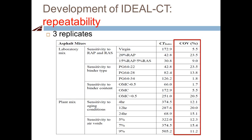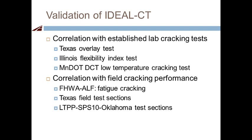In terms of repeatability, our goal is coefficient of variation below 20% with three replicate specimens. Looking at all the COVs, most mixes are at 20% or less — only two mixes showed 23.5%. This data is from about two years ago; with better equipment now, the numbers have improved further.